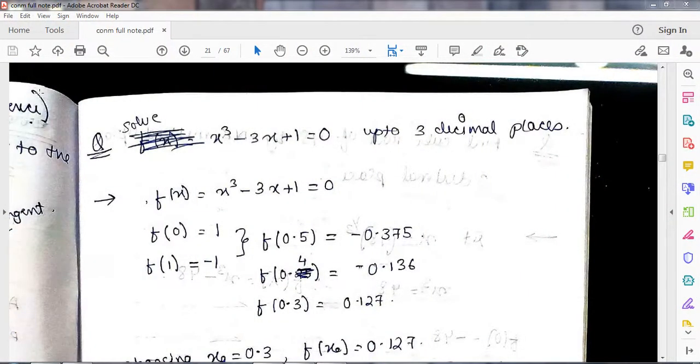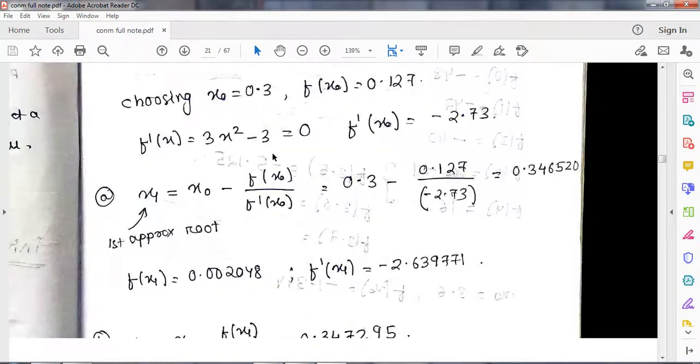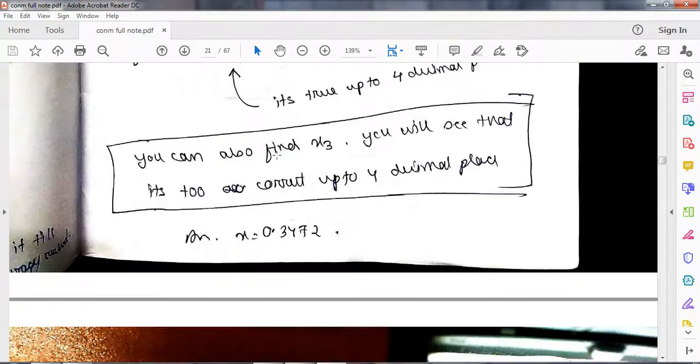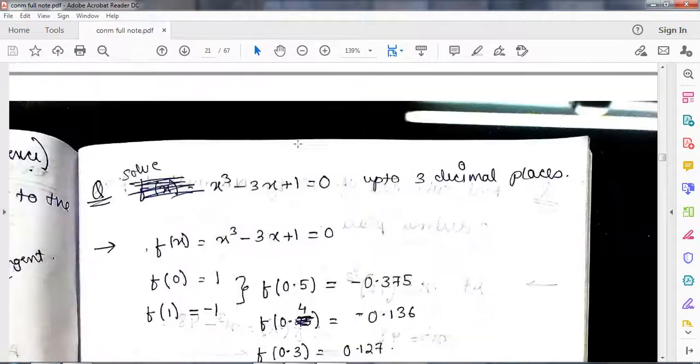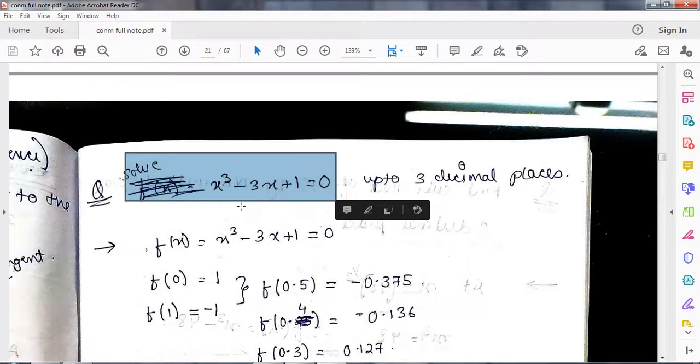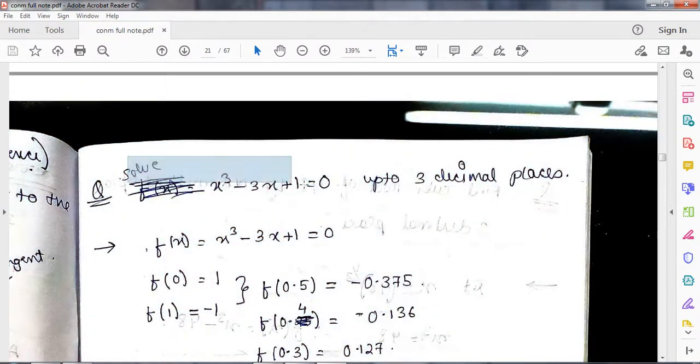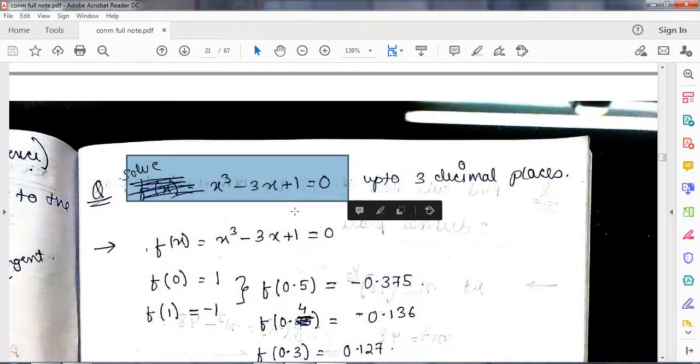Okay, in the Newton-Raphson method only, there is one thing I need to show you. Suppose in this question the equation is directly given to you. I mean, x cube minus 3x plus 1, the equation is directly given to you and you are asked to solve it. In such kind of case, it is very easy.